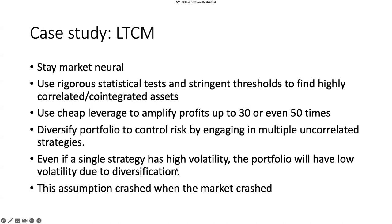If a single strategy has high volatility, the portfolio will have low volatility due to diversification — but again, that's based on historical data. Because of small-probability events where the market starts to move in one direction across all seemingly uncorrelated assets, this creates systematic risk. This assumption crashed when the market crashed.